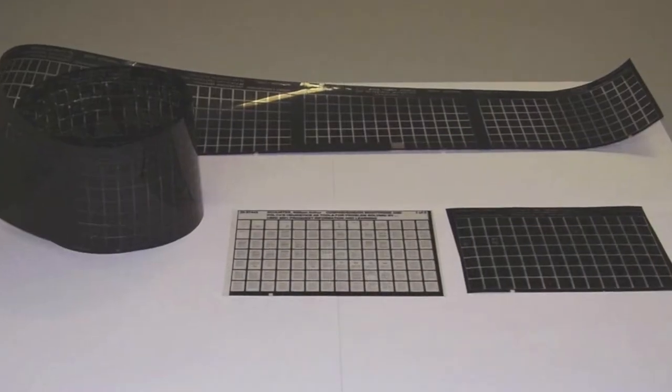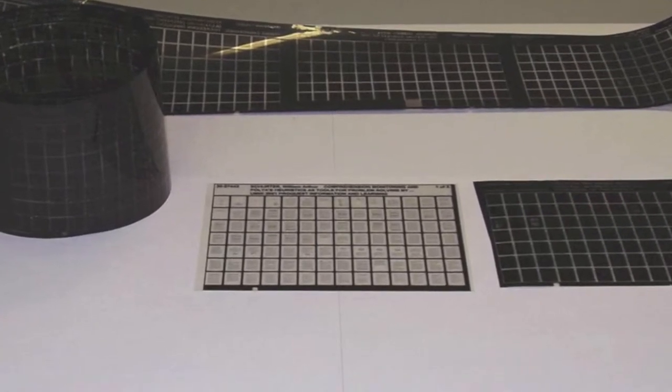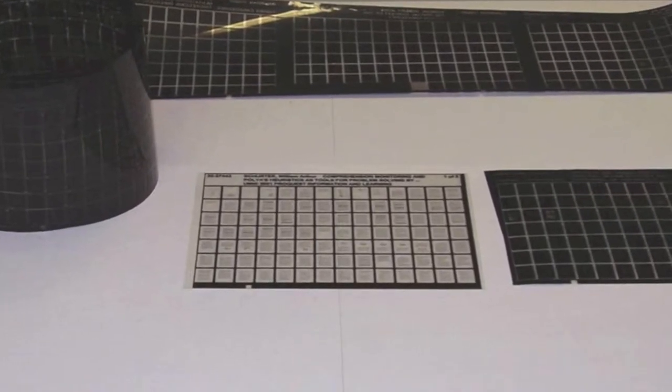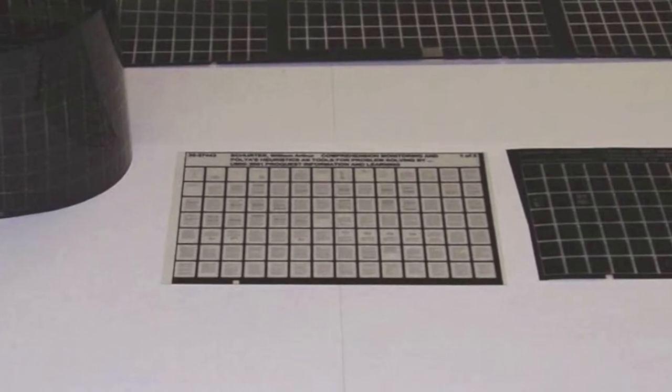Microfiche utilizes high reduction ratios to fit 100 plus pages, photos, or drawings onto a single 4 by 6 sheet. We'll talk more about reduction ratios later. Just think of it as how big or small the film pictures are.